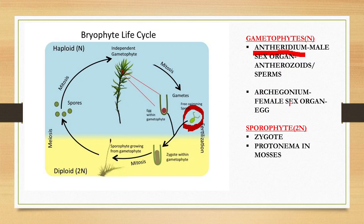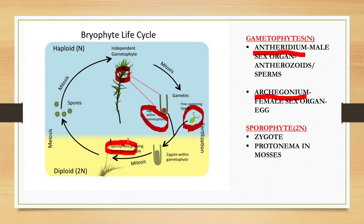The female sex organ is known as the archegonium, which produces the egg. Both the antheridium and archegonium are produced within the plant body. They fuse together — specifically within the archegonium — to produce the zygote. The zygote is still present within the main plant. It undergoes mitotic division and grows to produce an elongated structure called the sporophyte, which is diploid in nature. Within the sporophyte, meiosis takes place to produce spores, which are haploid and fall on the ground to produce a new plant body.